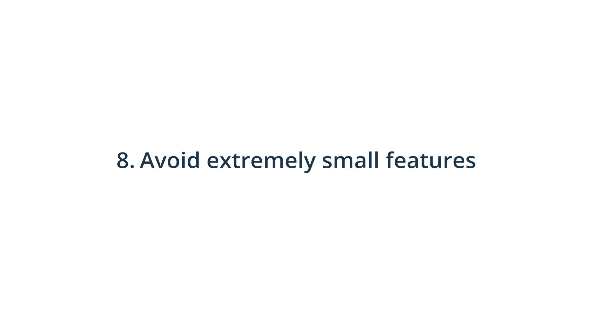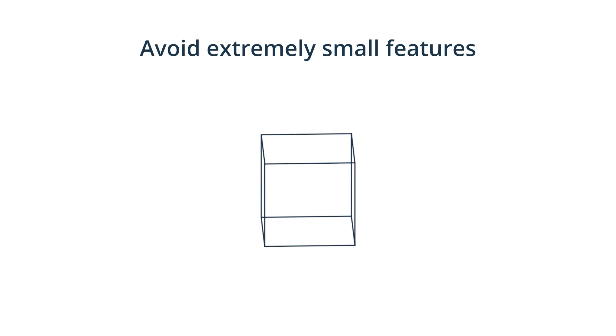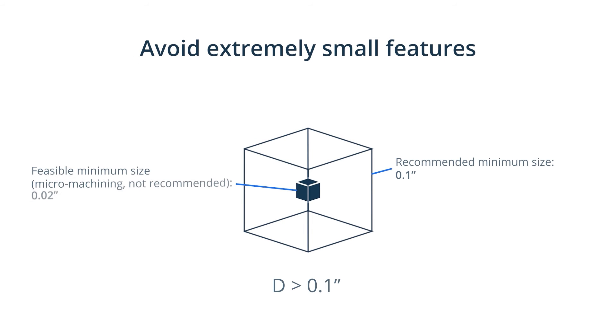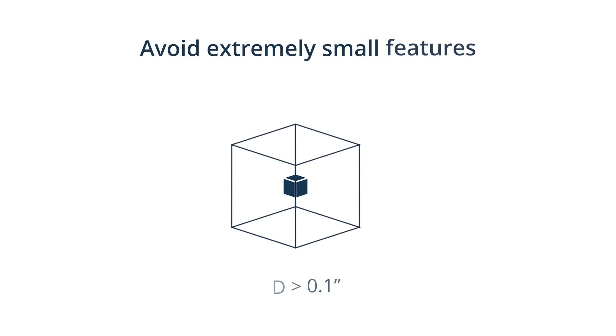8. Avoid extremely small features. Most CNC machines have a minimum tool diameter of 2.5 mm, meaning any features smaller than 2.5 mm would be difficult to machine and would require special tools, which increases machining costs and time.